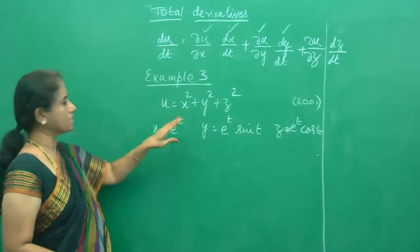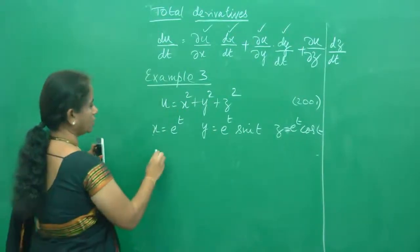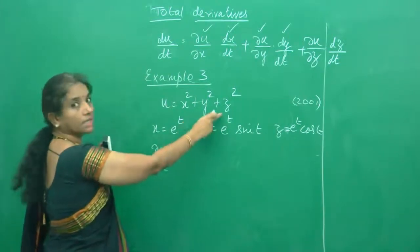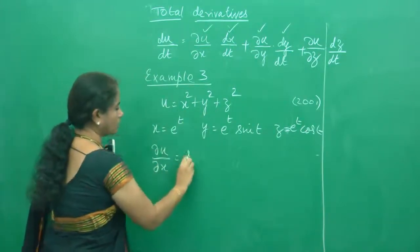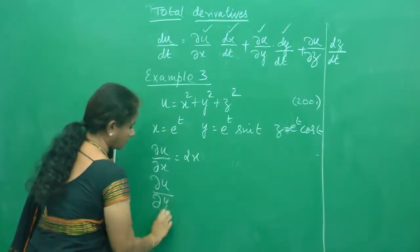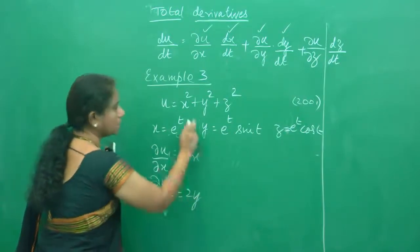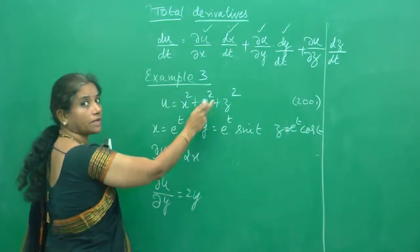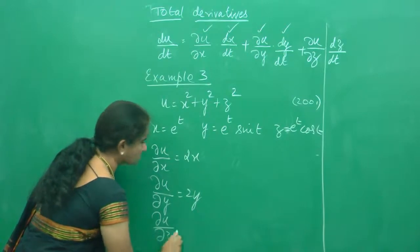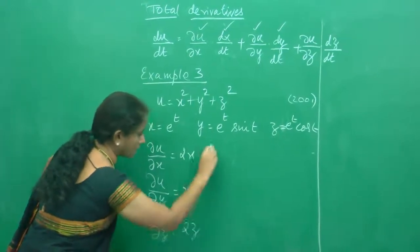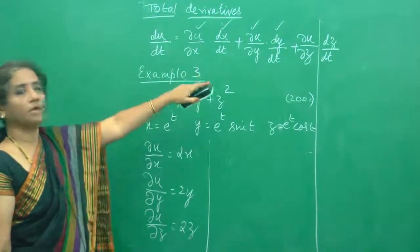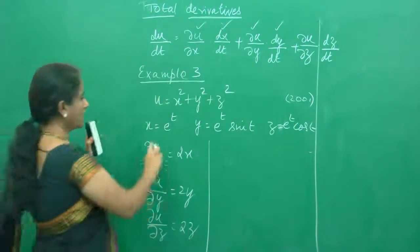After writing the formula correctly, our work remains the same. We are going to find dou u by dou x — it is very simple because y and z are constants, so dou u by dou x is 2x. What is dou u by dou y? It is 2y, because x and z are constants and the derivative of y square is 2y. And dou u by dou z is nothing but 2z. Once we know this, let me do dx by dt, dy by dt and dz by dt.